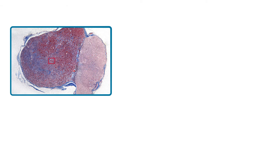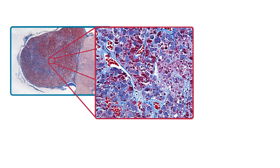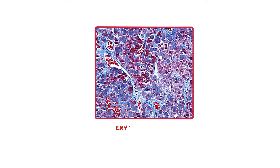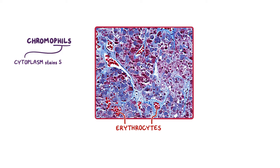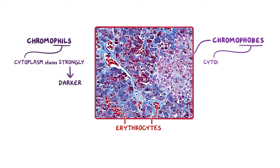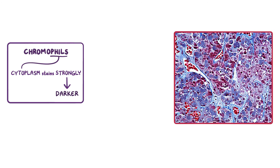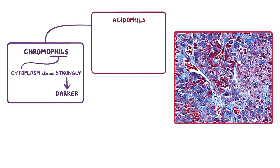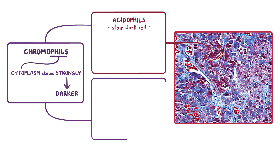Let's move anteriorly and take a look at the adenohypophysis. Besides the bright red erythrocytes, there are two main groups of cells named based on how well they stain. The chromophils have cytoplasm that stains strongly and as a result appear darker. The chromophobes have cytoplasm that stains weakly and appear lighter in the image. The chromophils can then be divided into acidophils that stain dark red and basophils that stain purplish-blue, due to their affinity for acidic or basic dyes, respectively.